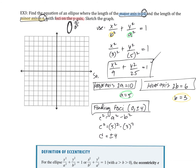For the graph: major axis is 10, so 5 units up and down from the origin to vertices (0, ±5). Minor axis is 6, so 3 units left and right to points (±3, 0). Foci are at (0, ±4). Draw in the ellipse with smooth curves — make sure there are no angles. And that completes the sketch.